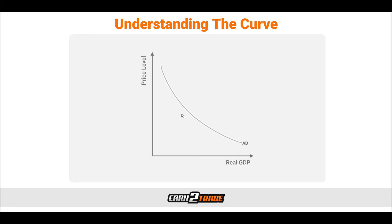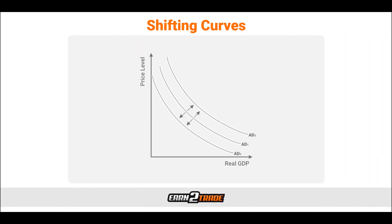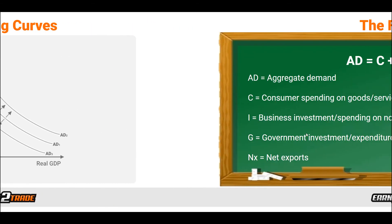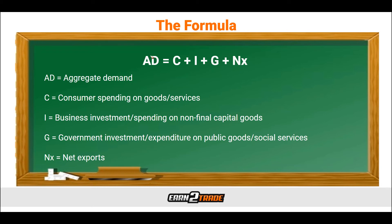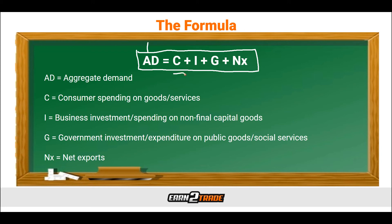As we switch over to what causes the graph to shift, we can see exactly what an upshift in economic activity would do to the graph, expanding the curve outward. The formula we use to calculate aggregate demand is based on an economic model presented by Robert Mundell and Marcus Fleming — it's commonly referred to as the Mundell-Fleming model. This is a very simple formula to follow because it is literally all addition. There is a much more complex formula which involves individual calculations for C, I, G, and NX. Our aggregate demand is AD, equal to C plus I plus G plus NX. C is consumer spending, I is business investment spending on non-final capital goods, G is government investment expenditure on public goods and social services, and NX is net exports.